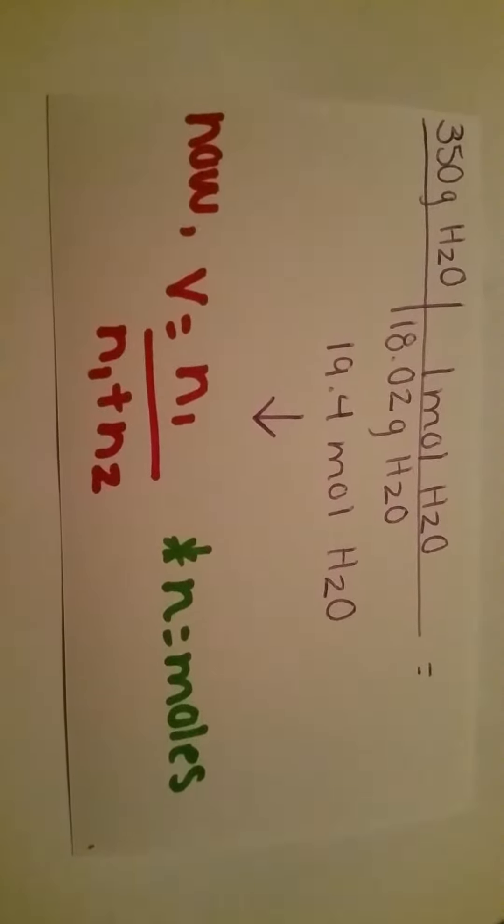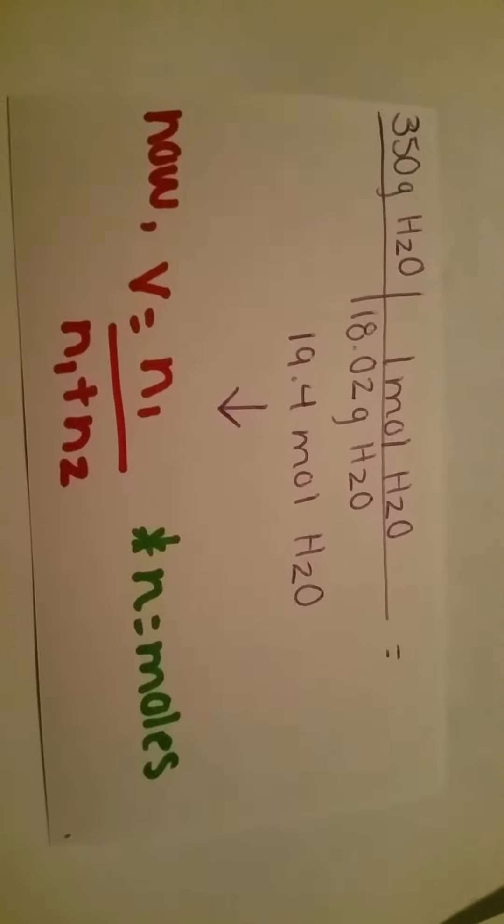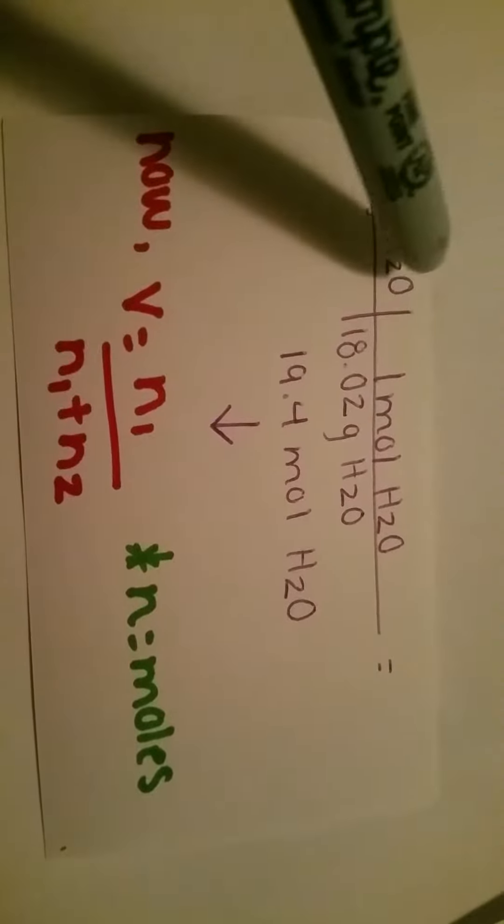We then repeat this procedure for water. 3.50 times 10 to the 2 grams equals 350 grams of water. Dividing 350 grams by the molar mass of 18.02 grams per mole gives us 19.4 moles of water.